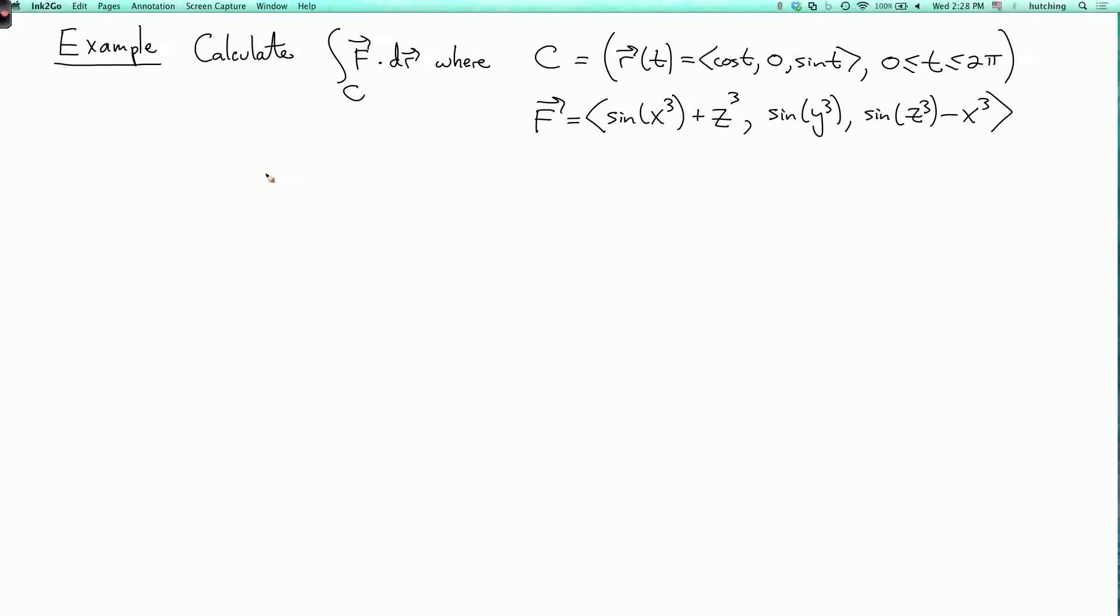If we do this directly, we get the integral from 0 to 2π of this vector field evaluated at (cos t, 0, sin t) dot product with r'(t). We're going to get stuff in here like sin(cos³ t), and that's going to be impossible to integrate.